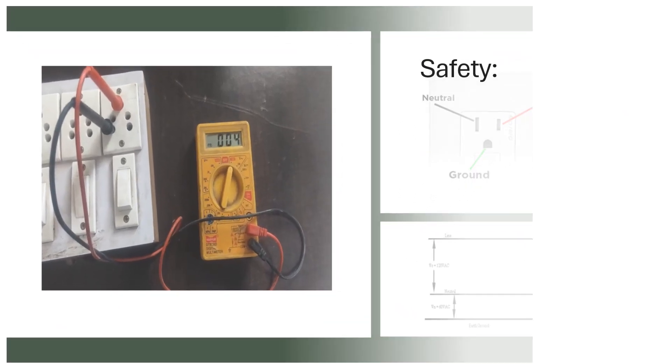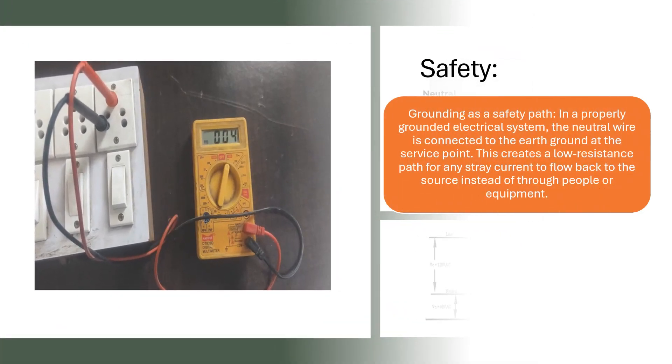Safety. Grounding as a safety path. In a properly grounded electrical system, the neutral wire is connected to the earth ground at the service point. This creates a low resistance path for any stray current to flow back to the source instead of through people or equipment.